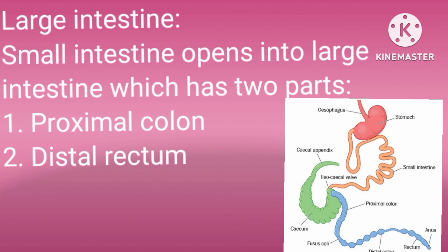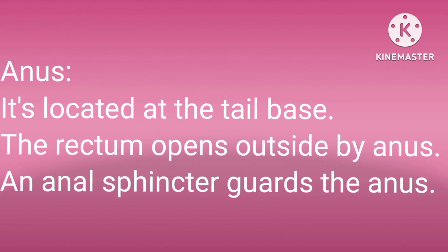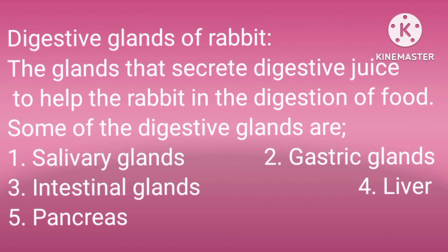The small intestine opens into the large intestine, which has two parts: the proximal colon and the distal rectum. The anus is located at the tail base; the rectum opens outside by the anus, and the anal sphincter guards the anus.